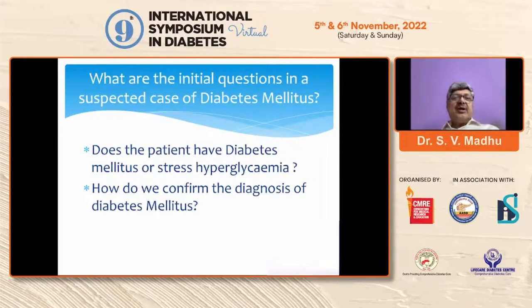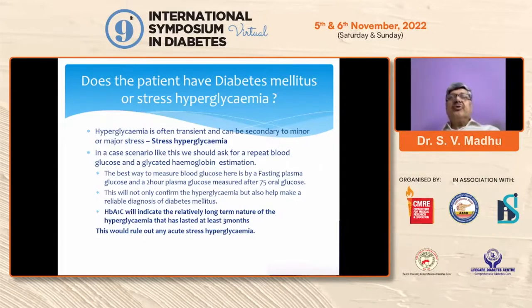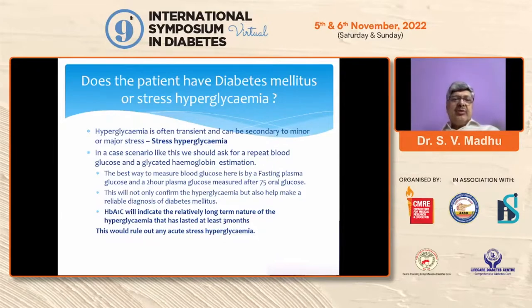What are the initial questions in a suspected case of diabetes mellitus? First and foremost: does the patient have diabetes mellitus, or if a hyperglycemia is detected, is it stress hyperglycemia? How do we confirm the diagnosis? Hyperglycemia is often transient and can be secondary to minor or major stress — what is known as stress hyperglycemia. In such a case we should ask for a repeat blood glucose and a glycated hemoglobin estimation. The best way to determine blood glucose is by a fasting plasma glucose and a two-hour plasma glucose measured after a 75-gram oral glucose challenge. HbA1c will indicate the relatively long-term nature of the hyperglycemia — lasting at least three months — and hence would help us rule out any acute stress hyperglycemia.